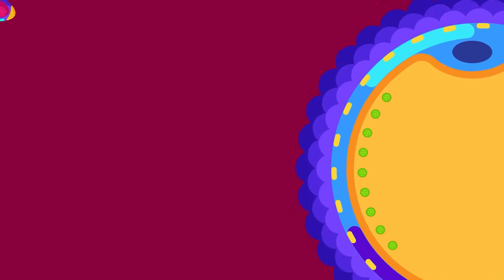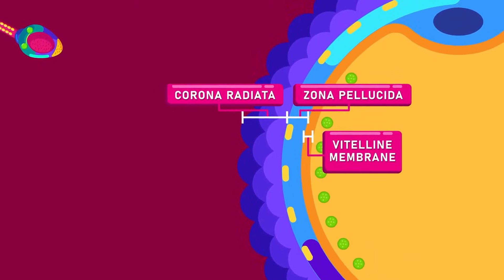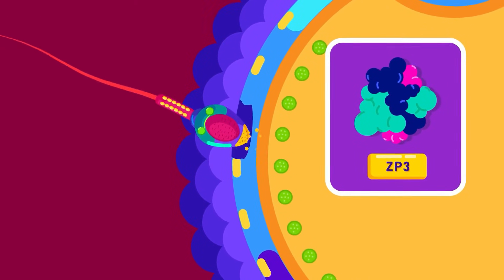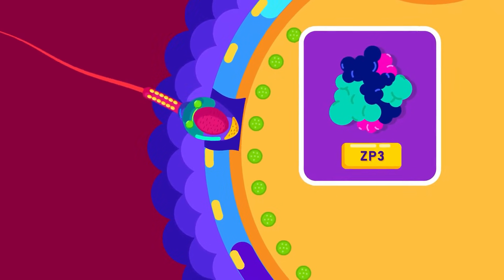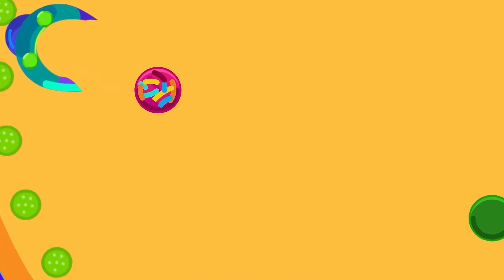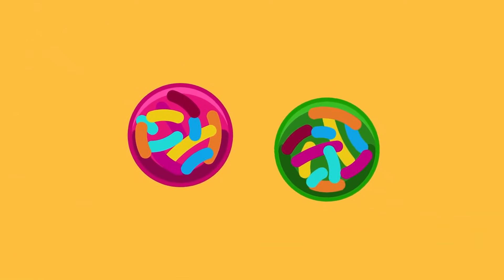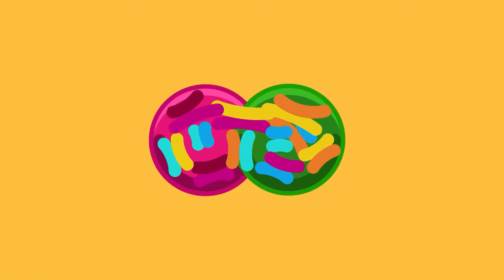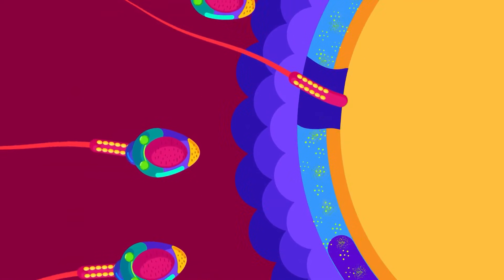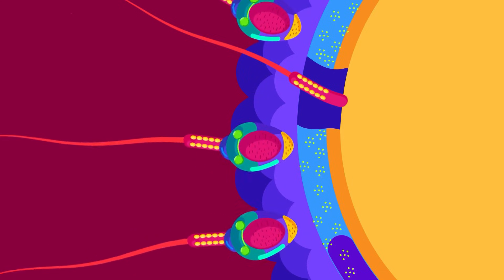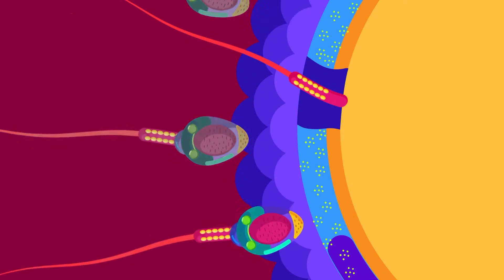Usually, the egg released by the ovary is enclosed by several layers of follicle cells. To pierce the egg, the sperm releases an enzyme from the acrosome to break down one of the inner layers of the egg cell. Only one sperm enters the egg. The haploid sperm nucleus fuses with the haploid egg nucleus and a diploid zygote is achieved. As soon as the sperm enters the egg, the membrane of the egg becomes impermeable to all other sperms trying to enter. The remaining sperms which do not fertilize eventually die.